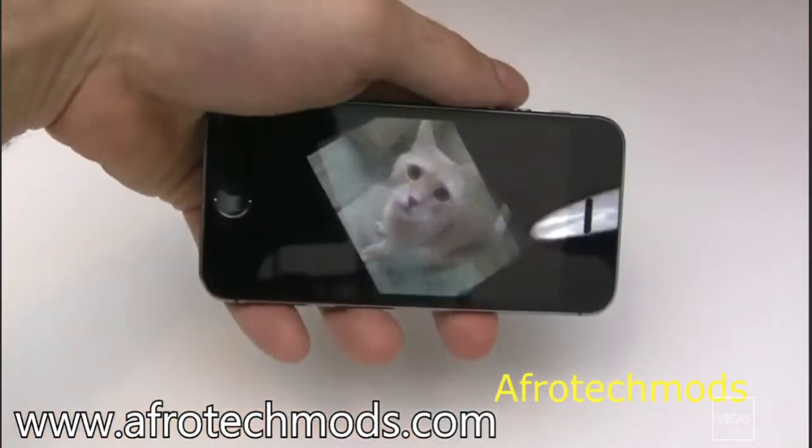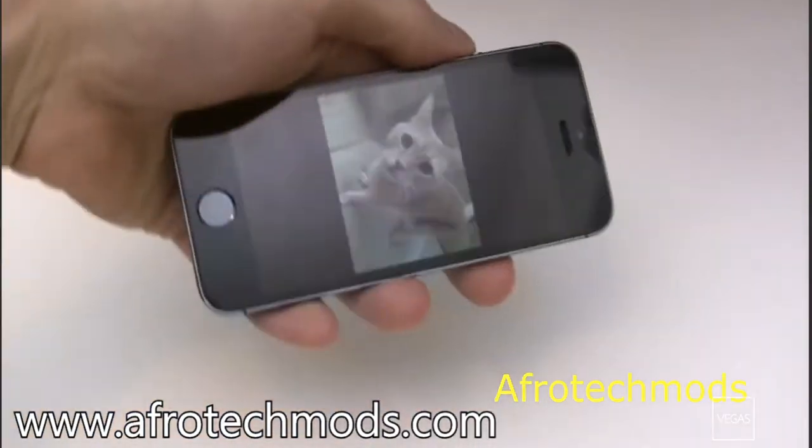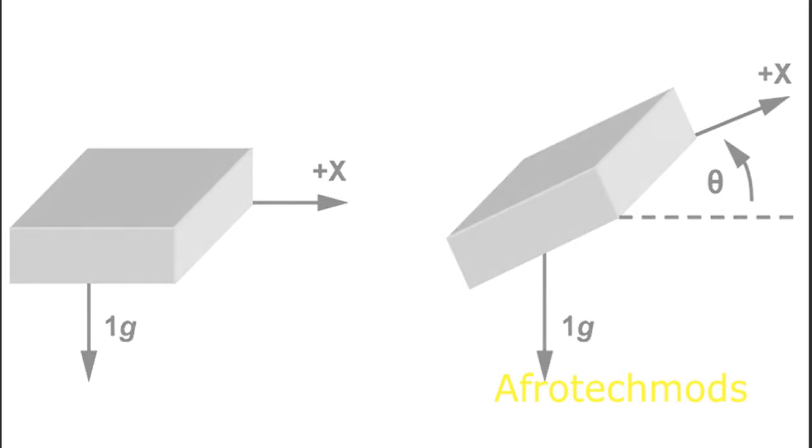Have you ever wondered how your phone manages to know what direction you're holding it? It's using a device called an accelerometer. It works by sensing the acceleration of gravity, and then you can calculate what direction the phone is facing.